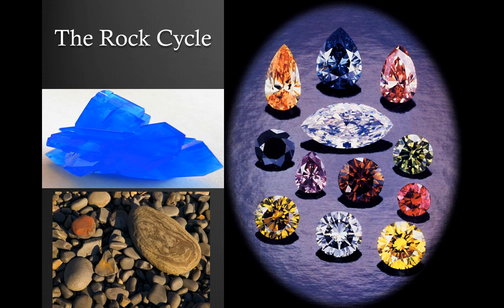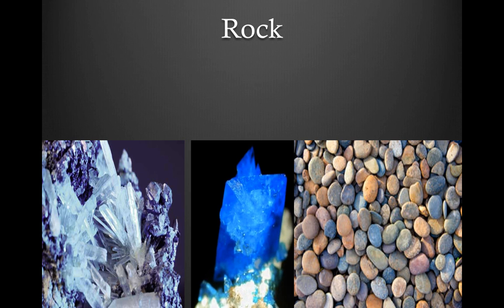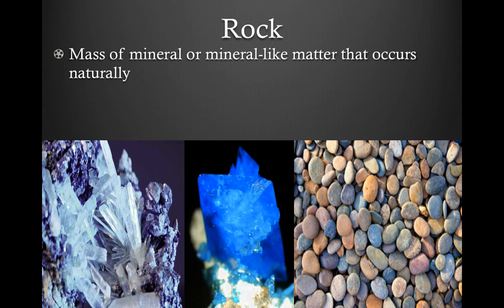We're moving on to our next section in earth science: the rock cycle. We're going to look at individual rocks and rock types within the earth and on the surface of the earth. A rock is a massive mineral or mineral-like matter that occurs naturally. The key word is naturally — there are man-made rocks, but the rocks we study in this class must come from nature. They're all different shapes, sizes, and colors, but they must come from nature.